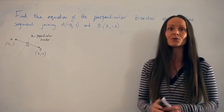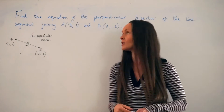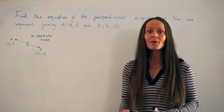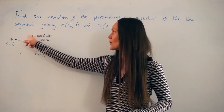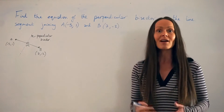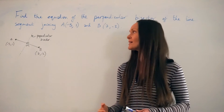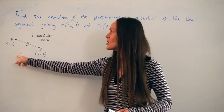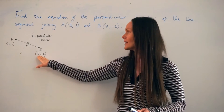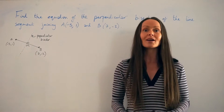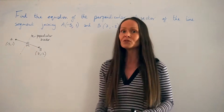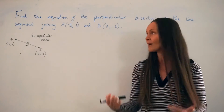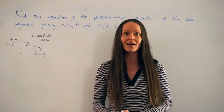There are a few steps we need to follow to work out the equation of the perpendicular bisector. First, we're going to work out the gradient of the line AB. From there, we can write down the gradient of the perpendicular bisector. Then, before we can work out the equation of the perpendicular bisector, we need to know the coordinates of at least one point along this line. We have the coordinates of A and B, so from there we can work out the midpoint of this line, which gives us the coordinates of point N. Then we can use those coordinates along with the gradient to work out the equation of that line.